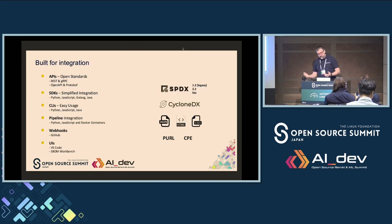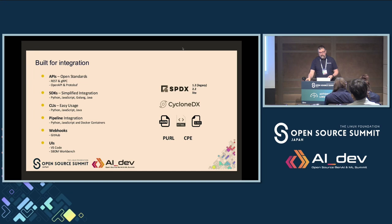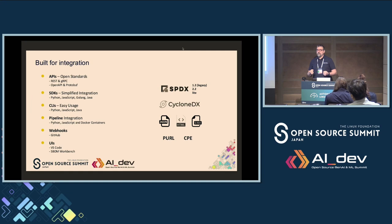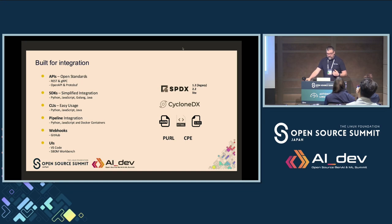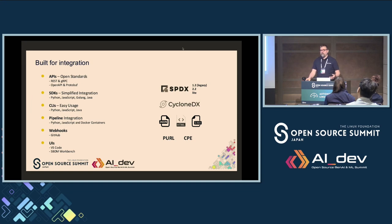We have an API — REST and gRPC, based on OpenAPI and Protobuf. We have built SDKs in different programming languages to facilitate integration. Since we have the SDKs, we've built CLIs on top of those as an easy use case — the Python CLI is the most popular. The scanning we make is language agnostic, so using the Python CLI doesn't mean it only detects Python code; you can detect any programming language. We also have pipeline integration solutions for different technologies, webhooks, pre-commit hooks, VS Code integration, and other IDE integrations.